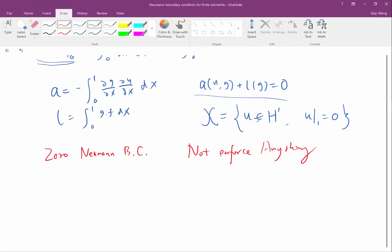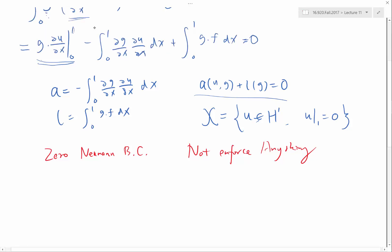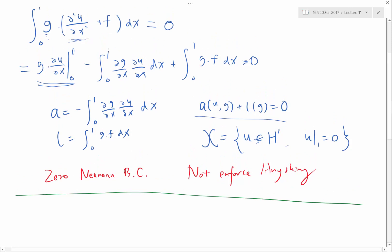Now, if I want a non-zero Neumann boundary condition, I cannot expect to do the same thing, right? What if I have a non-zero Neumann boundary condition?